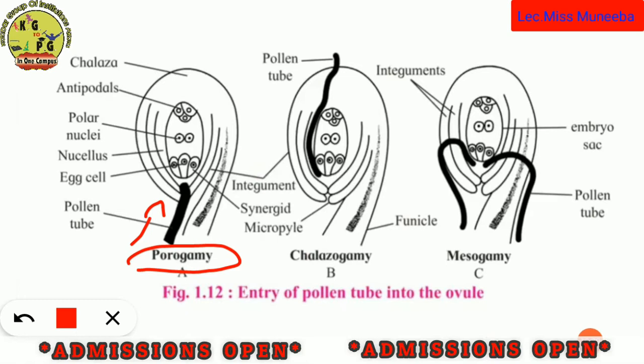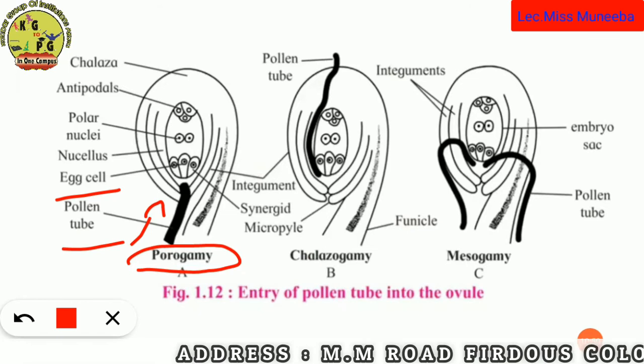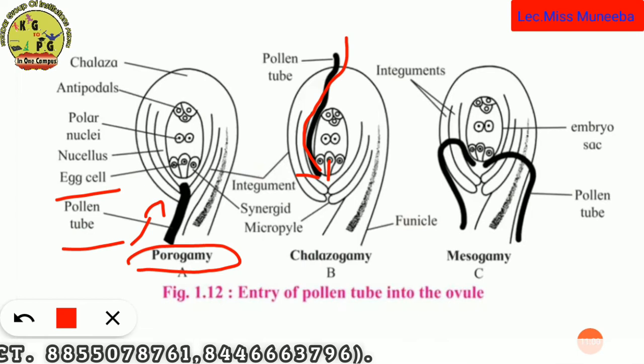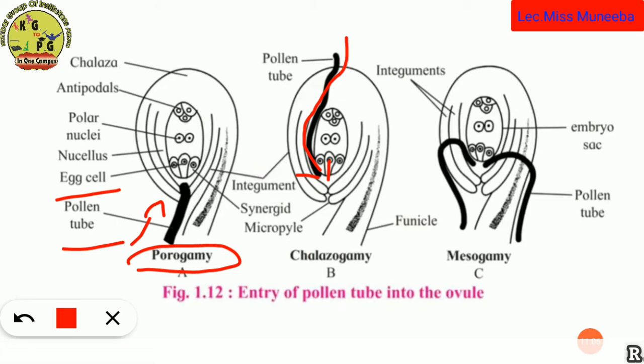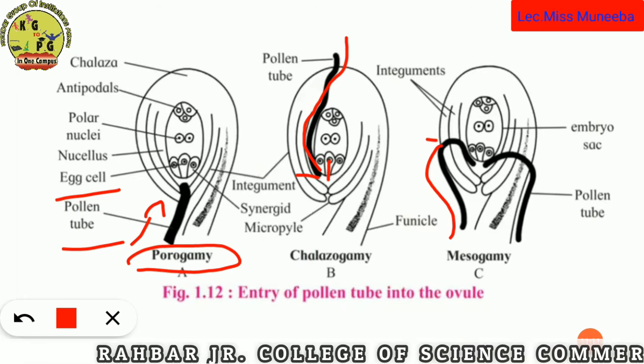The pollen tube inserts and there is fusion — first with the egg cell, then the second male gamete fuses with the secondary nucleus. The third type is Mesogamy. Mesogamy means the pollen tube enters through the middle — it pierces through the integuments in the middle region. There are thus three terms: Porogamy (micropylar entry), Chalazogamy (chalaza entry), and Mesogamy (entry through the integuments in the middle).